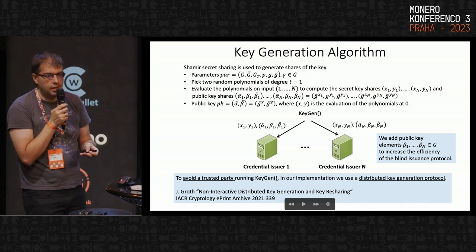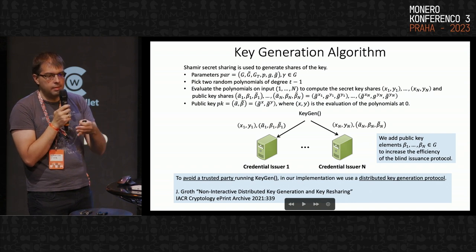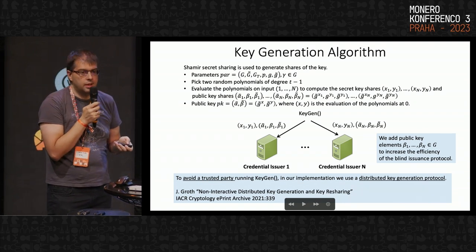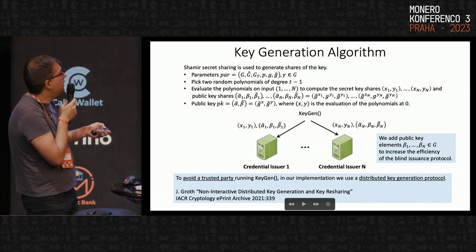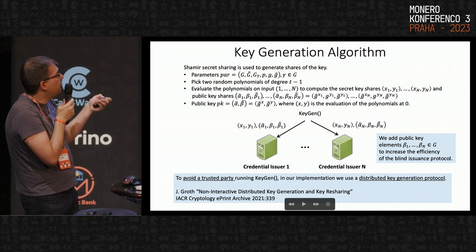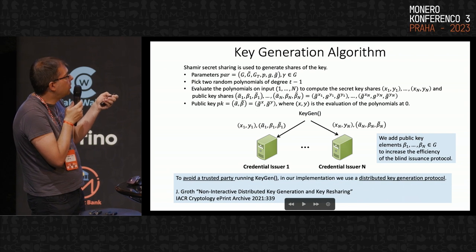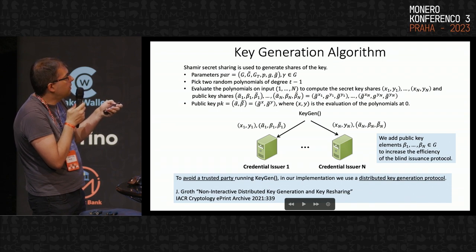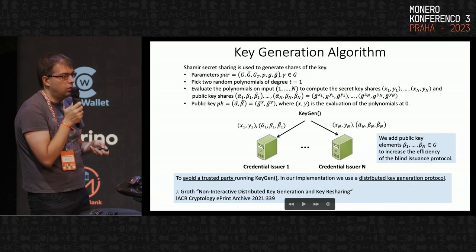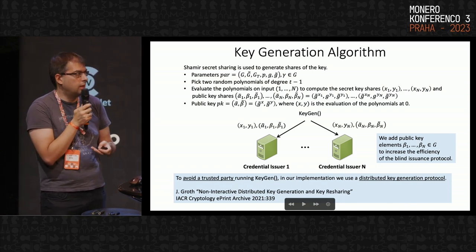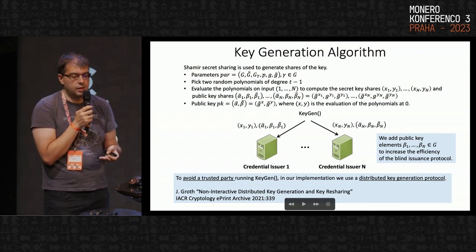We replace the key generation algorithm with one that computes a key share for each credential issuer, using Shamir's secret sharing. In the single-message case, we create two random polynomials and evaluate them n times to compute each share of the key. The public key shares are computed as usual, but we add an extra element in the public key in group G (rather than in group G-tilde). This is done to improve the privacy of the blind issuance protocol — this element is used to provide blind issuance privacy that holds unconditionally.